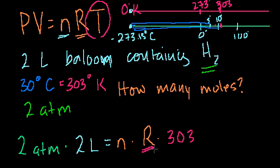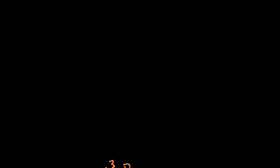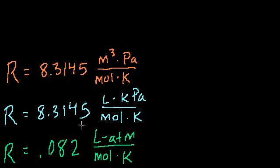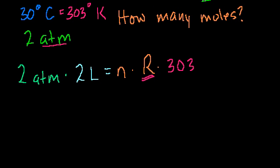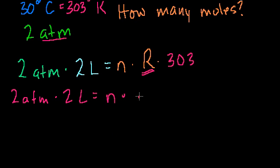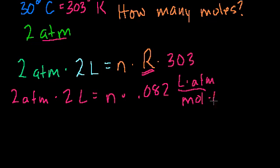Now we have to figure out what constant to use here. Remember, we're dealing with atmospheres and liters. We're always dealing with mole and Kelvin in the denominator, no matter what. So we should use this proportionality constant: R equals 0.082 liter atmospheres per mole Kelvin.